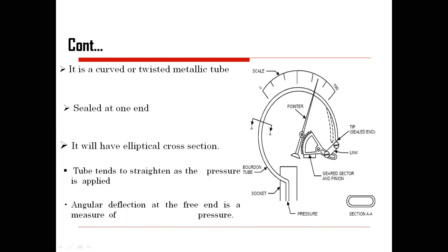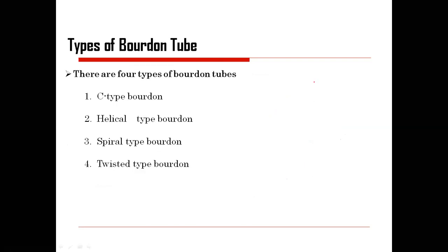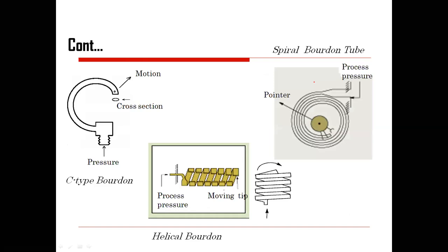Here is the practical structure. This is the open end from where the pressure is applied. It will pass through the Bourdon tube. This is the link, pinion, and sleeve, then the geared structure. After applying pressure it moves through, and this will try to move backward. The gears will move and this pointer will move either in the forward or reverse direction as we increase or decrease the pressure. There are C-type, helical type, spiral type, and twisted type Bourdon tubes — these are the different structures of the Bourdon tube.